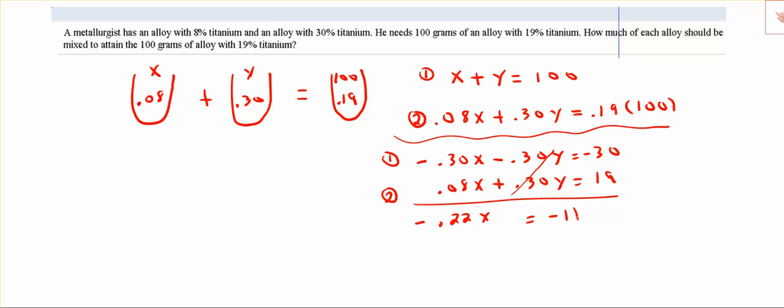Divide both sides by negative 0.22. That tells us that the X container has 50 grams. And keep in mind the X container represented the 8%, so the X at 8% would have 50 grams.